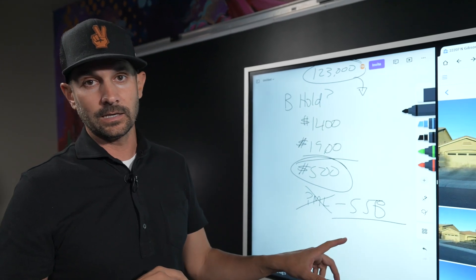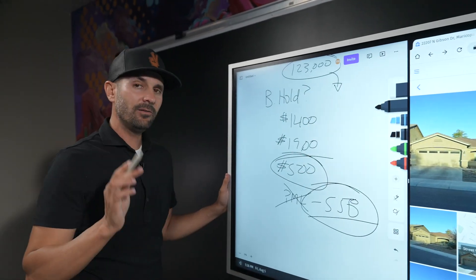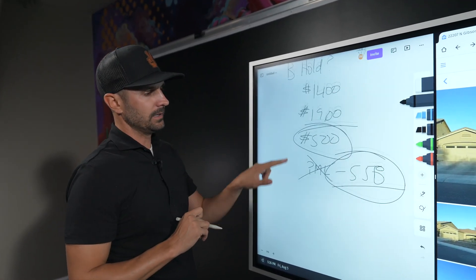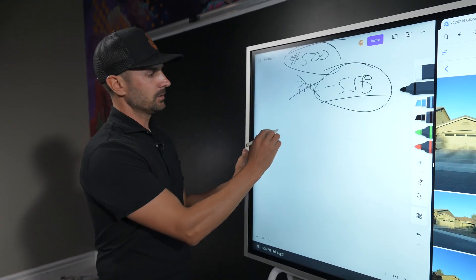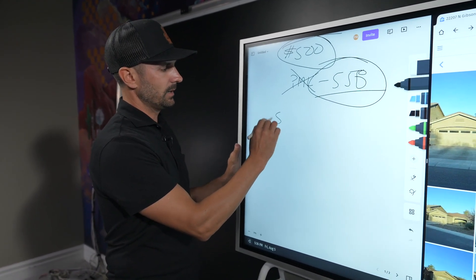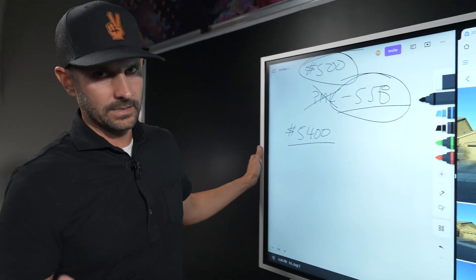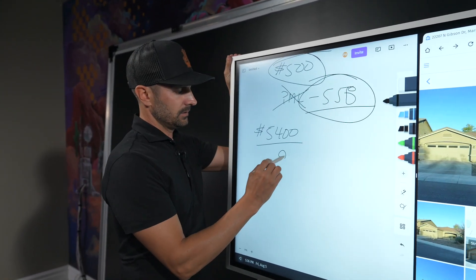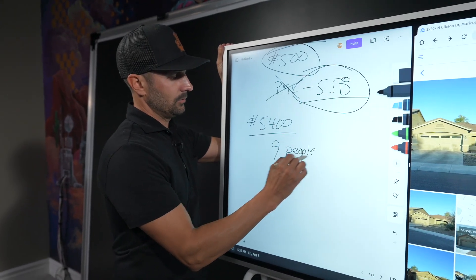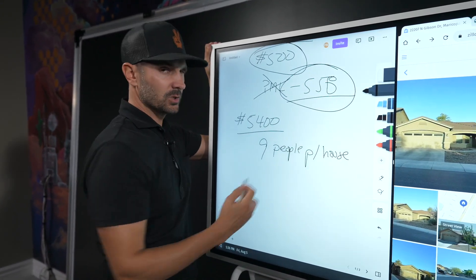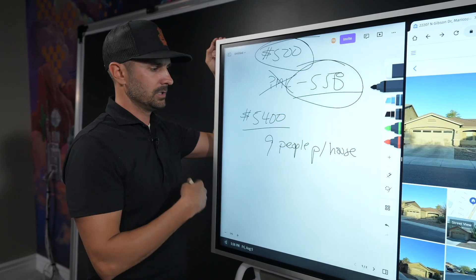That's not good because if your cash flow was $500, now your private money lender takes $558. This deal doesn't cash flow. In fact, you lose $58, and that's before maintenance, vacancy, other little repairs, legal fees, all that kind of stuff. Tenants kind of suck. You're gonna lose money. However, if you turn this into a sober living...